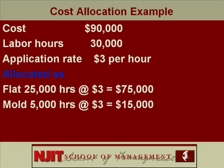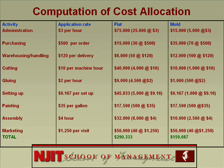Now we have to allocate the cost. For administration: cost is $90,000, took 30,000 labor hours, so the application rate is $3 per labor hour. Flat took 25,000 hours — 25,000 at $3 is $75,000. Mold took 5,000 hours — 5,000 at $3 is $15,000. When you add it up it should equal $90,000 — so you've allocated the $90,000 between flat and mold. Do this analysis for the other activities. Total overhead allocated: flat $290,333, mold $159,667, which adds up to $450,000.